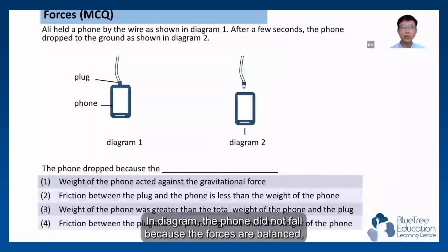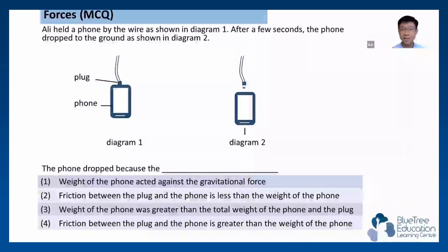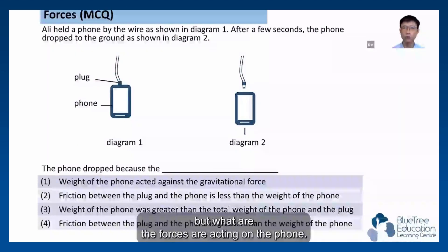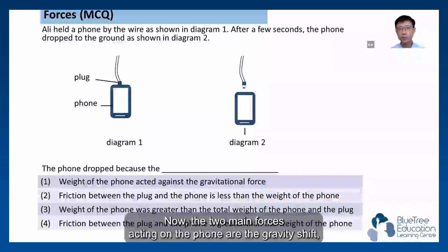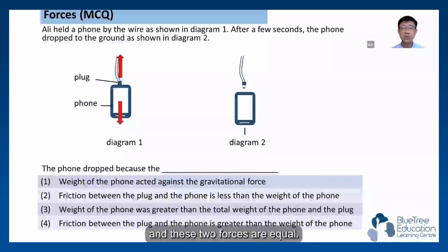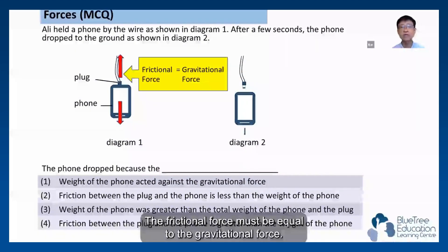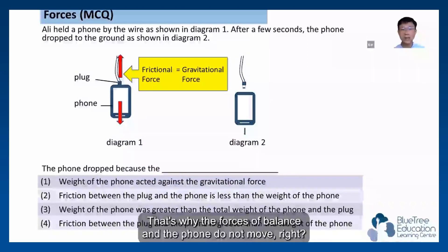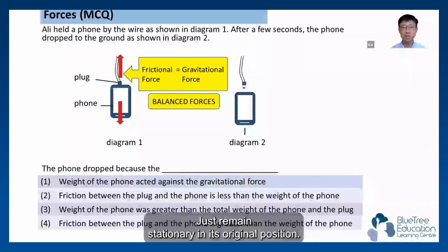In diagram 1, the phone did not fall because the forces are balanced. The two main forces acting on the phone are the gravitational force and the frictional force, and these two forces are equal. The frictional force must be equal to the gravitational force. That's why the forces are balanced and the phone does not move — it remains stationary in its original position.